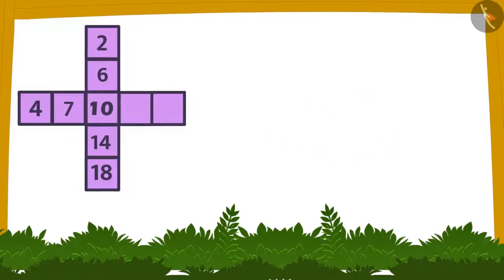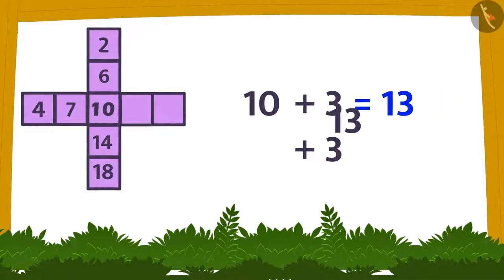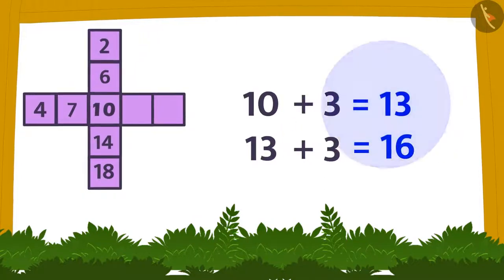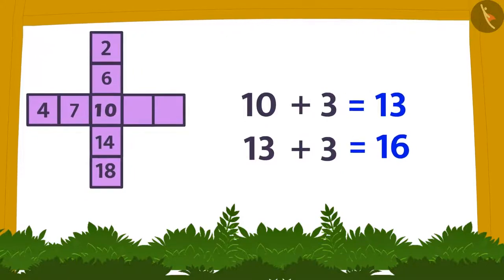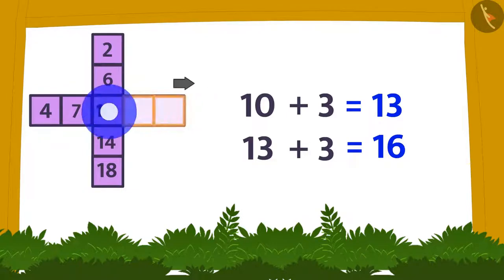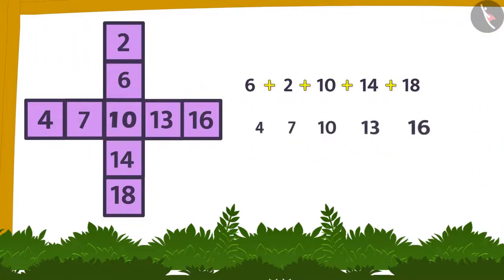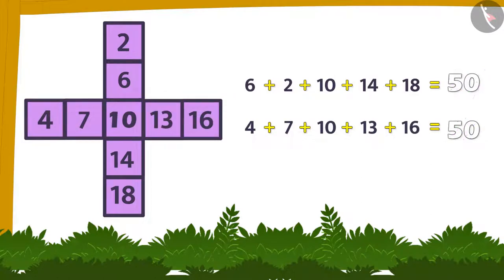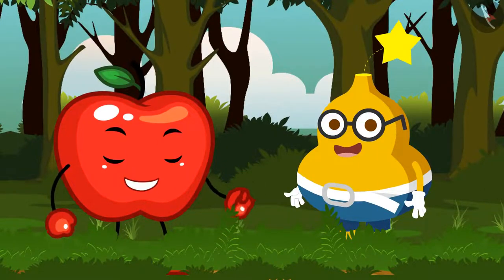In the same way by successively adding 3 to 10 twice I get 13 and 16. These can be filled into two horizontal cells to the right of the central number like this. Now you can see the vertical and horizontal sum is 50. Hence in this way I have solved the puzzle.